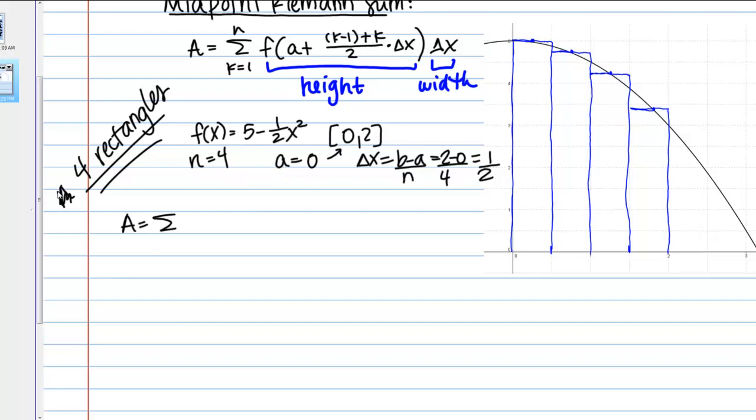Now that we have all our information, we can plug into our expression. K equals 1 to 4, f of 0 plus, so we've got this k minus 1 plus k over 2, which that form is good because it makes sense. You see that that's a midpoint. But for the purposes of calculation, I'm going to write that as 2k minus 1 over 2 times delta X, which is 1/2. That's all inside the function there, f of all of that. Then times 1/2 outside. That 1/2, this 1/2 outside, is a constant multiple. I can pull that out front of the summation. I end up with f of 2k minus 1 over 4.